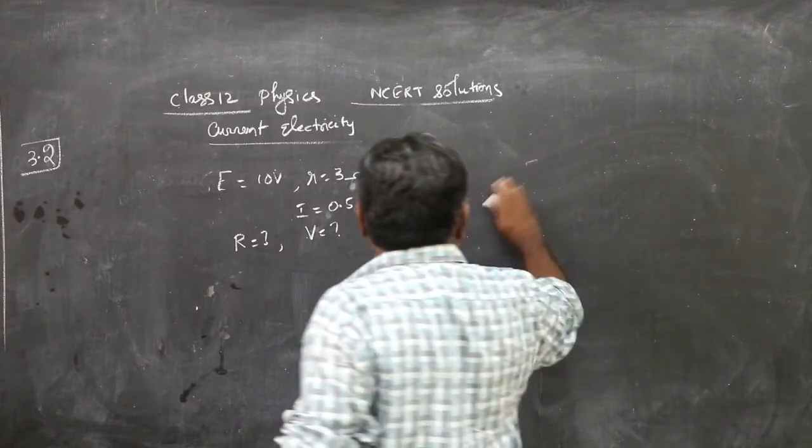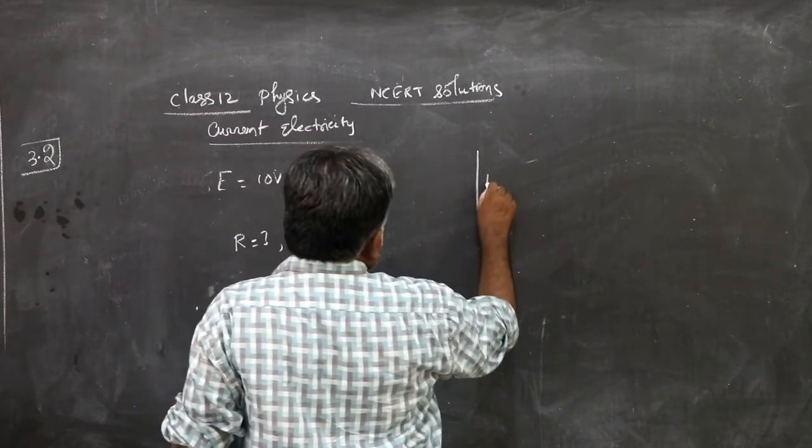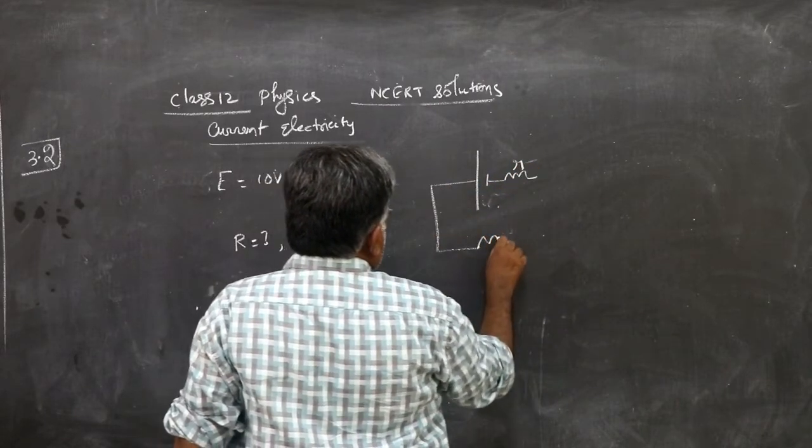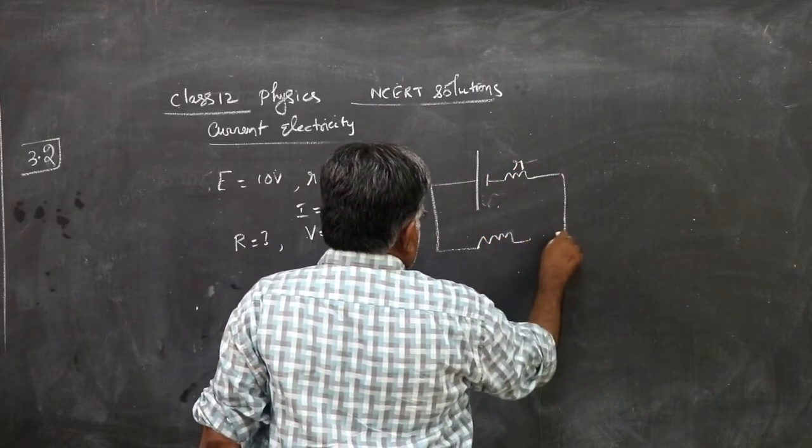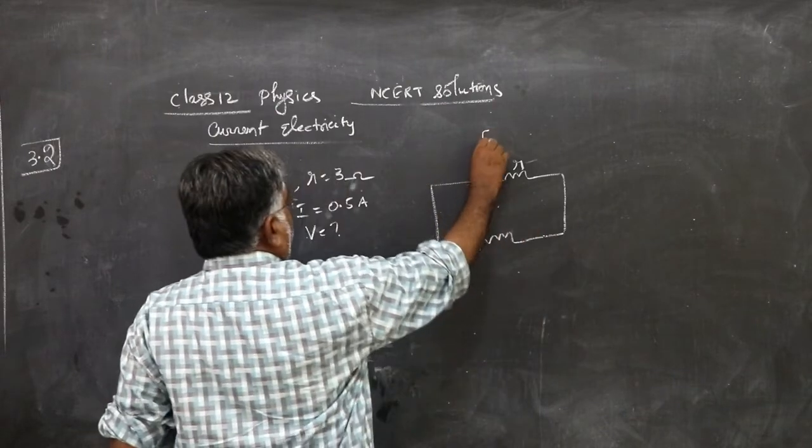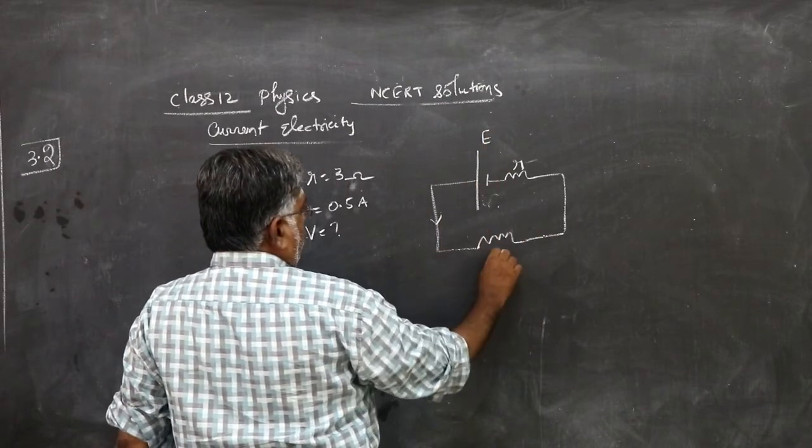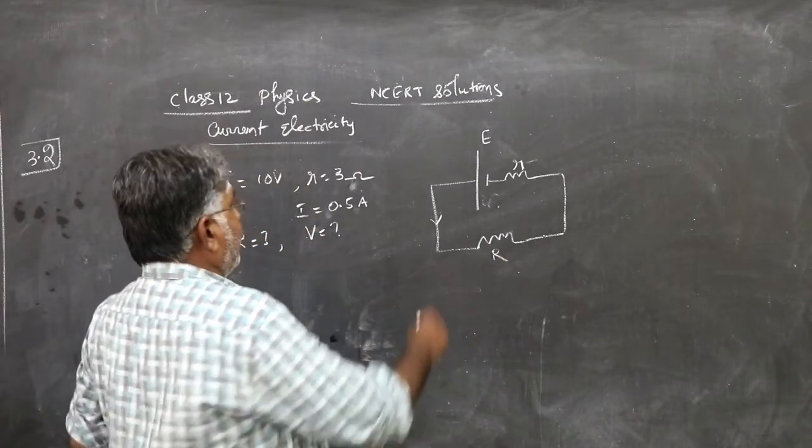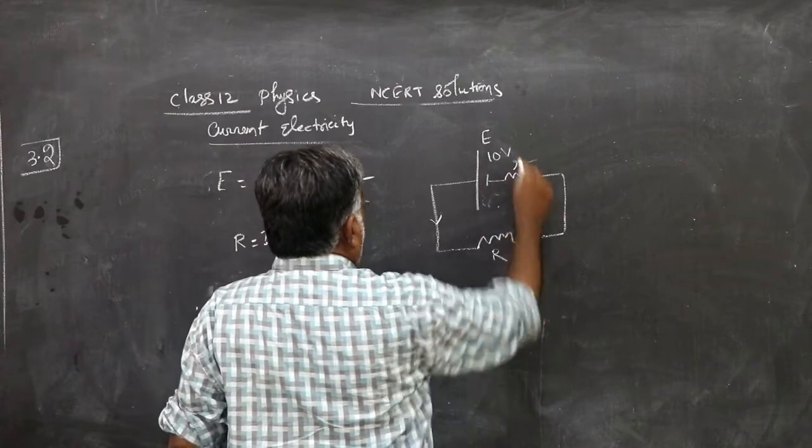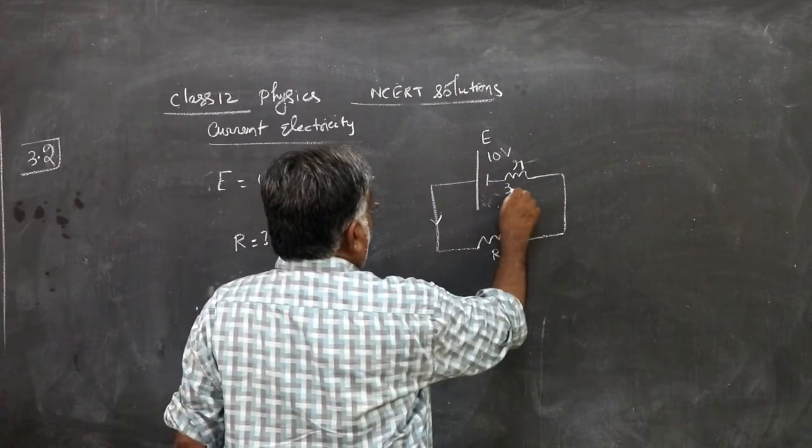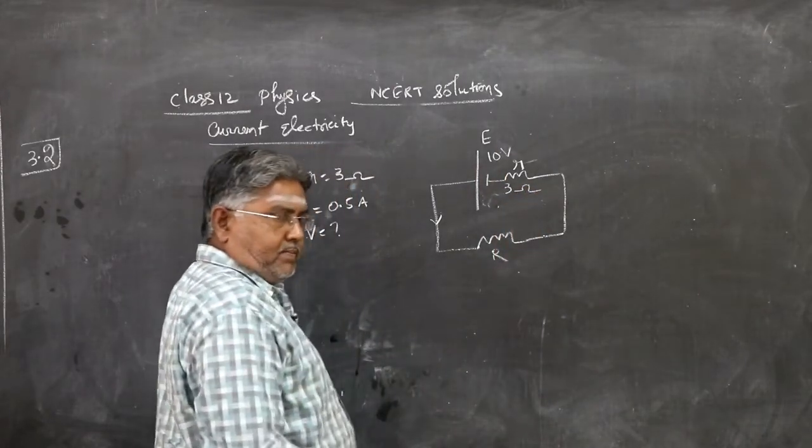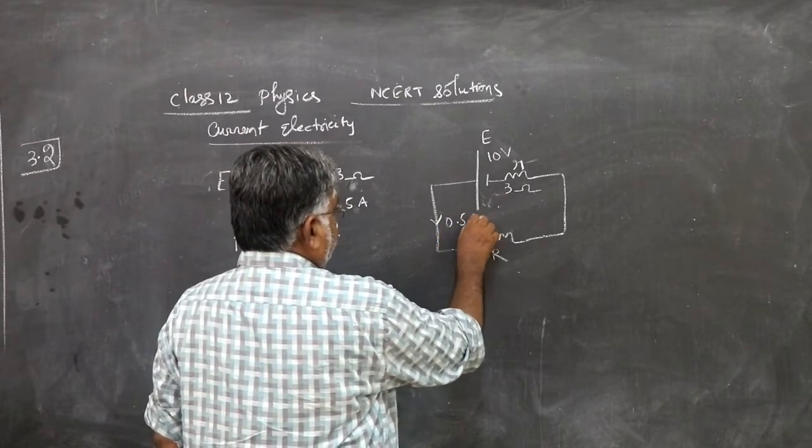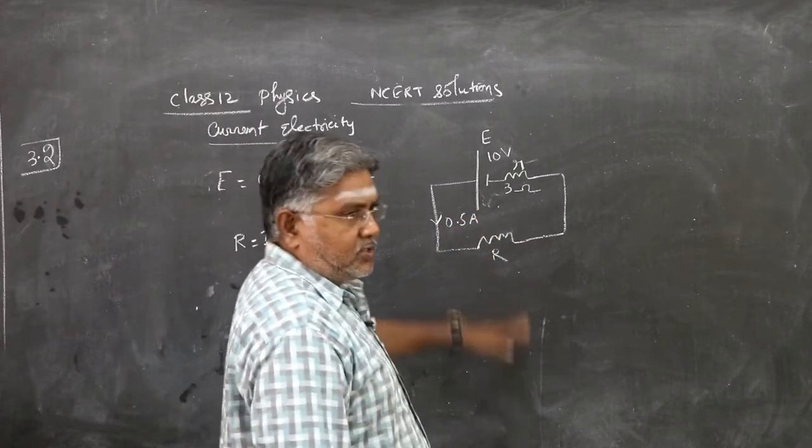So, circuit diagram, first you draw, this internal resistance, the EMF, capital R, which is to be found. EMF 10 volt given, internal resistance 3 ohm given, current 0.5 ampere. You are supposed to find this resistance, simple, easy.